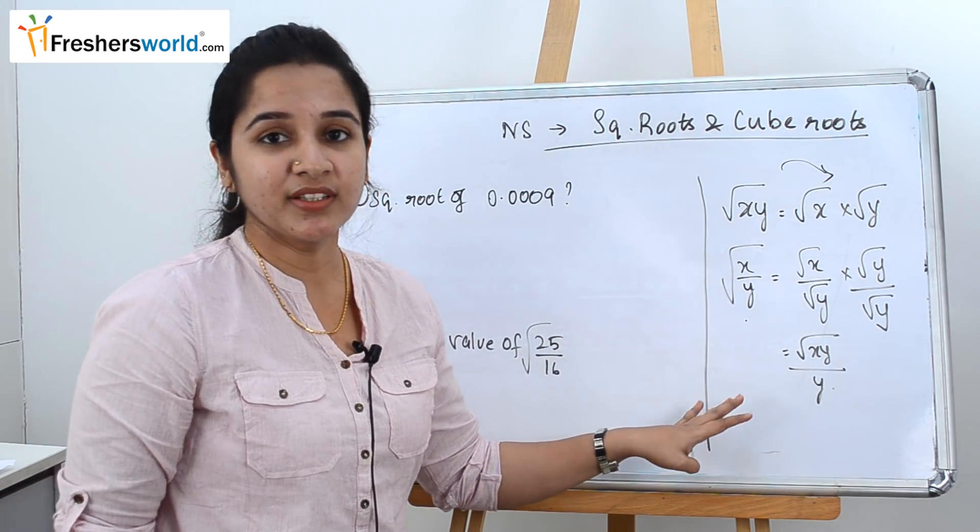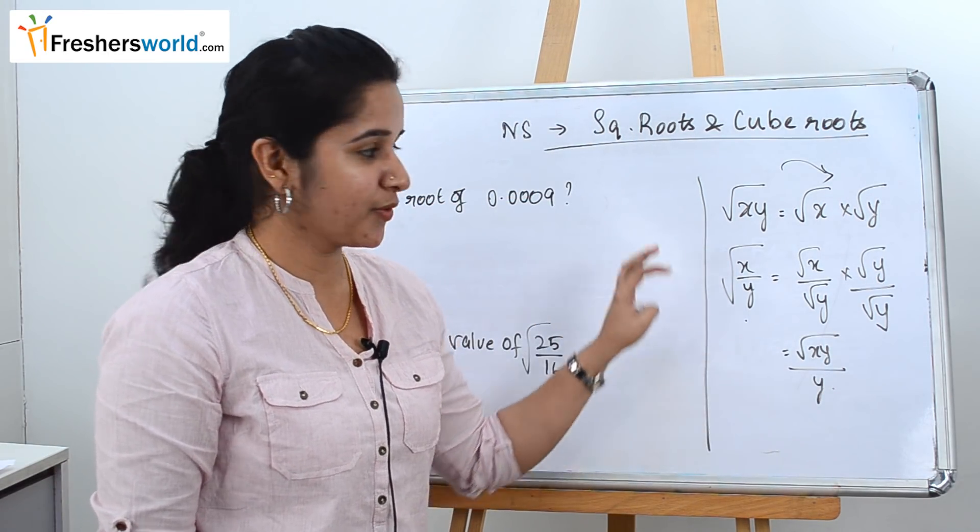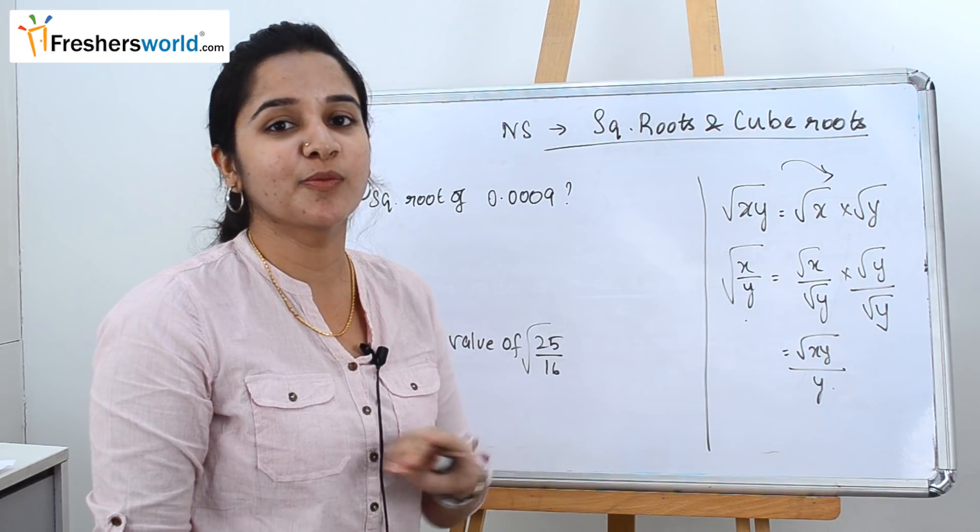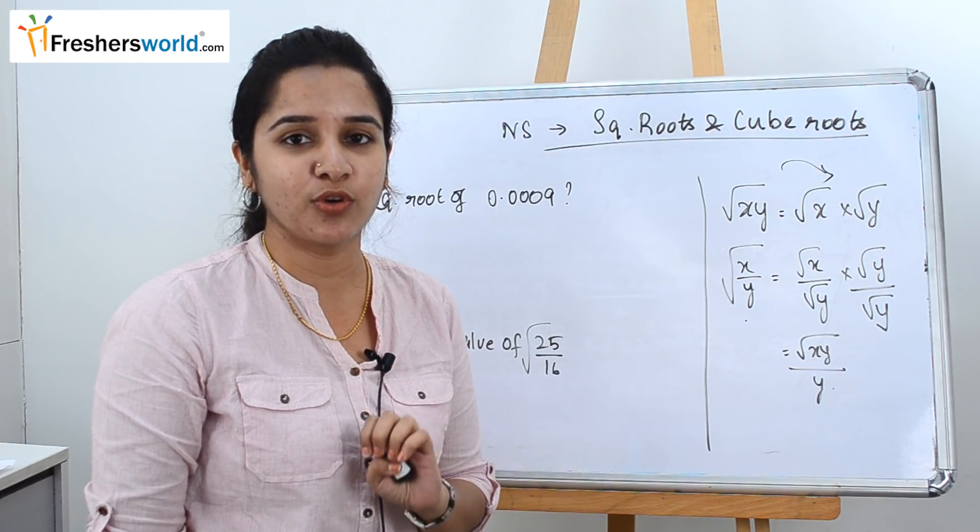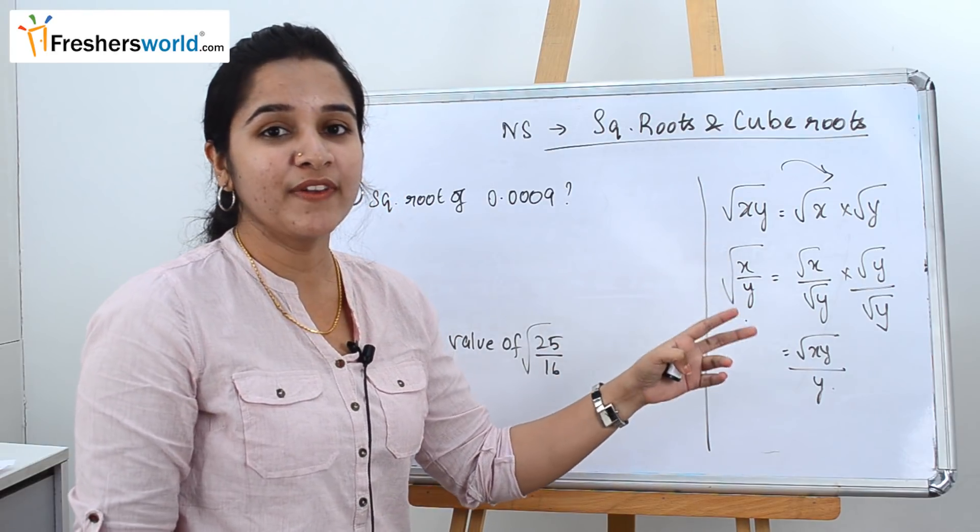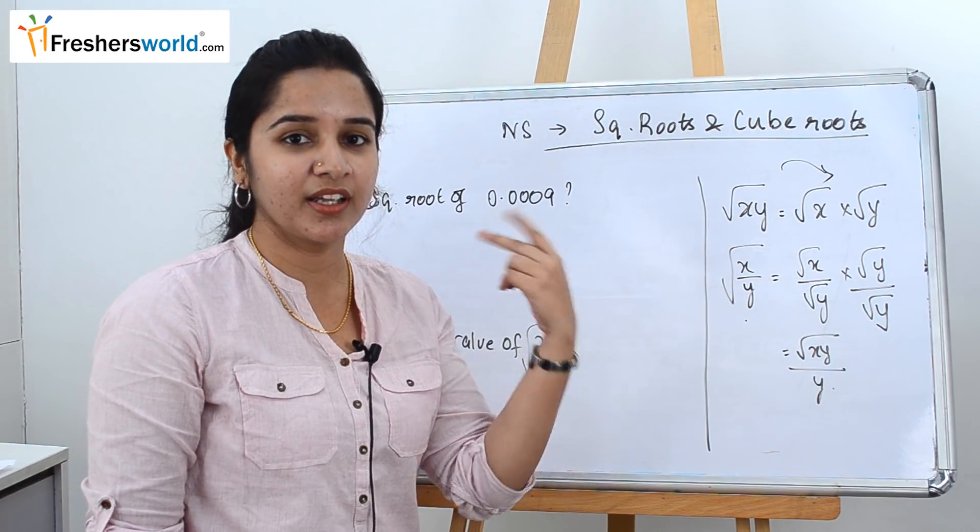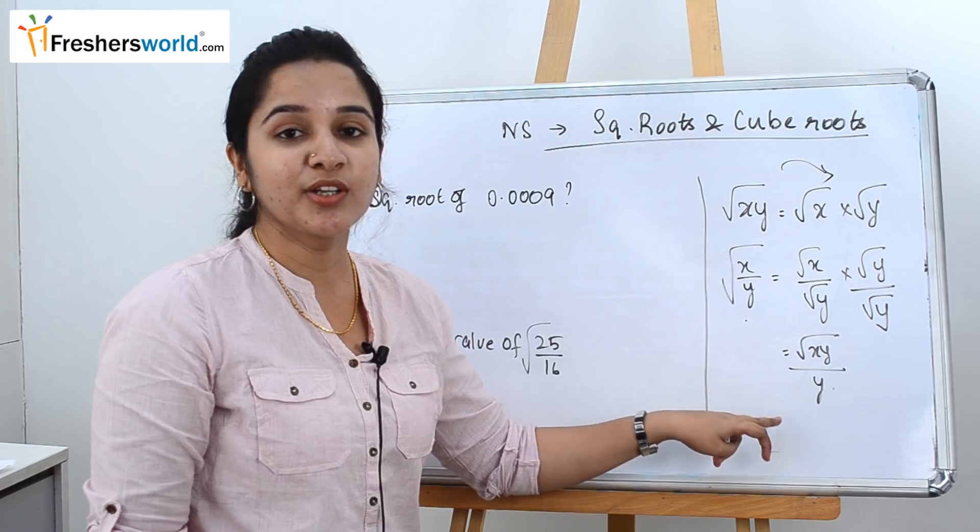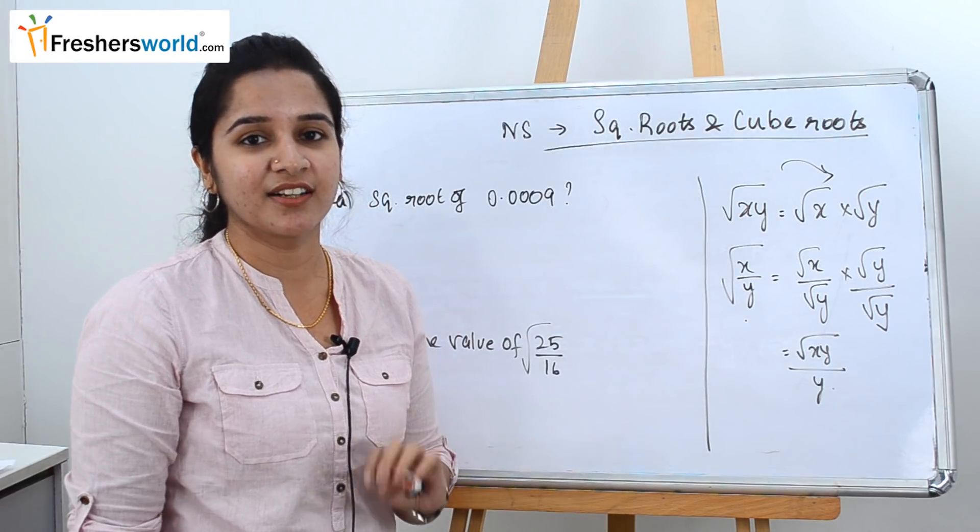So why are we knowing this? In initial problems, you don't have to know all these things because it will be a normal straight-cut square root or a cube root. But when you are solving tougher problems, you should know how we can multiply it with a similar number in the numerator and denominator to reduce it to a common value. So let's get started with the simpler sums.